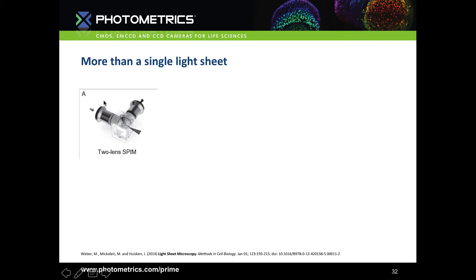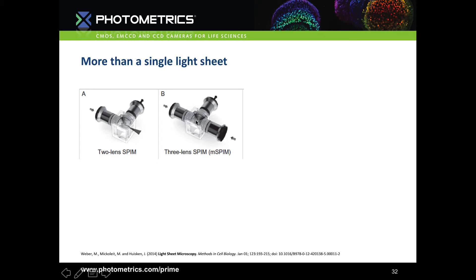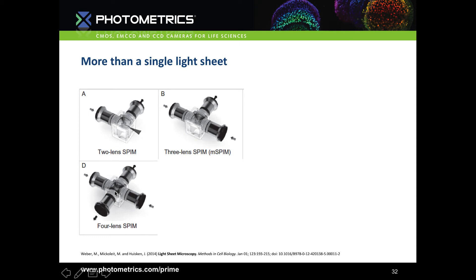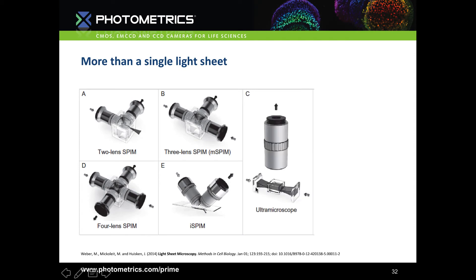Now let's look at the different arrangements of lightsheet systems. 2-lens SPIM is the simplest: the lightsheet comes in through the illumination objective and fluorescence is detected at 90 degrees. 3-lens SPIM introduces lightsheets from both sides to overcome refraction, scattering, absorption and shadowing — this includes the pivot scanning and dual view methods, called mSPIM. 4-lens SPIM adds another detection pathway for two cameras imaging simultaneously. Then there is iSPIM and diSPIM, and finally the ultramicroscope.